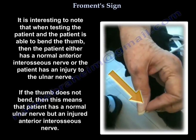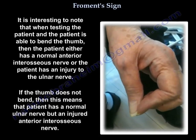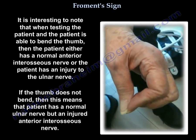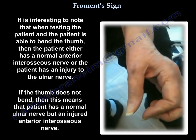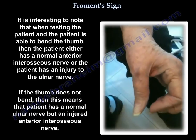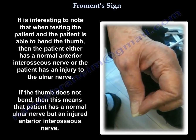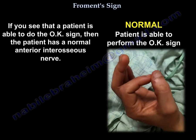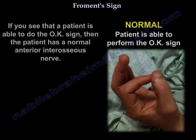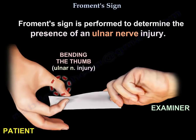When testing the patient: if the patient is able to bend the thumb, this means either the anterior interosseous nerve is normal or the patient has an ulnar nerve injury. If the thumb does not bend, the patient has a normal ulnar nerve but an injured anterior interosseous nerve. Therefore, if a patient can do the OK sign, the anterior interosseous nerve is normal; but if the patient bends the thumb while pinching a piece of paper, that patient has an ulnar nerve palsy.